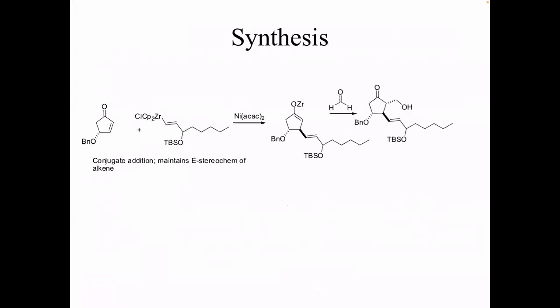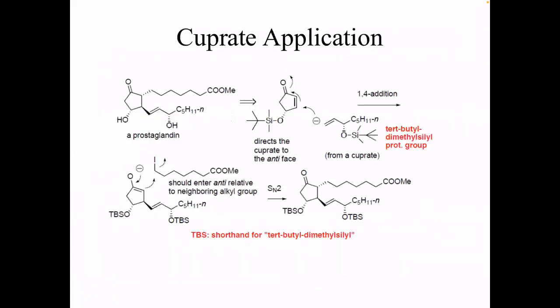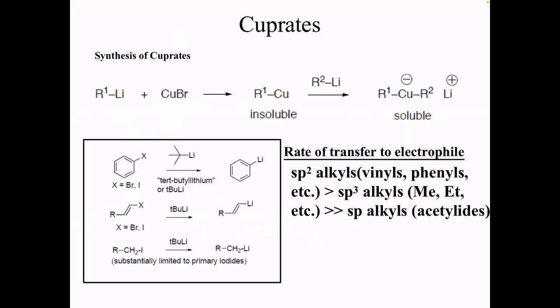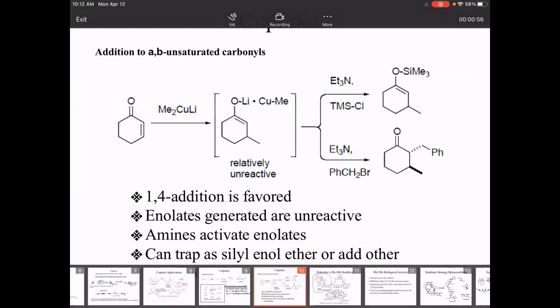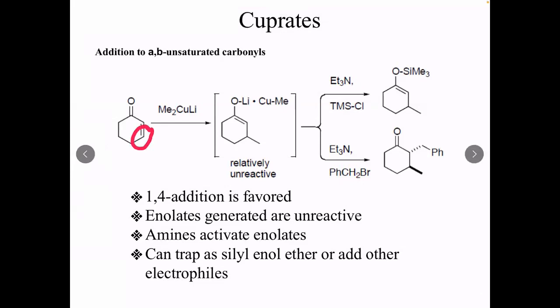We left off talking about cuprates and the dummy ligand, and talked about the reactivity of certain cuprates and backbonding. One of the other reactions that cuprates participate in and do well is 1,4-addition, which we've seen already with a different reactant. If you take an alpha-beta unsaturated carbonyl and treat it with a cuprate, the dominant pathway is 1,4-addition. This goes back to hard-soft acid-base theory where cuprates are considered soft and the beta position, the four position, is considered a soft spot.